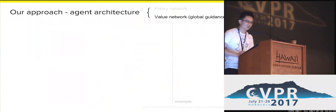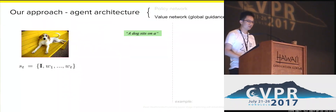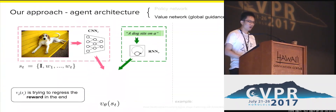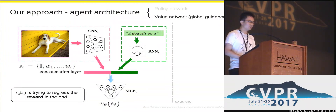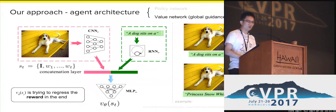Now let me introduce our value network, which is the key difference. Our value network serves as a global guidance. Given the current state — an image and a partially generated sentence — the value network gives an estimation of how good that state is towards the final goal: how likely the partially generated sentence will end up with a very good description for the image. The value network tries to regress the reward at the end. We use a CNN and an RNN to capture information separately, then concatenate and pass through a multi-layer perceptron to produce a scalar value estimate. For example, given a dog image, the partial sentence 'A dog sits on a...' receives a high value, while 'Princess Snow White' receives a low value.